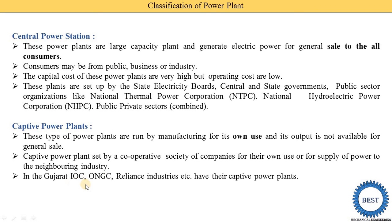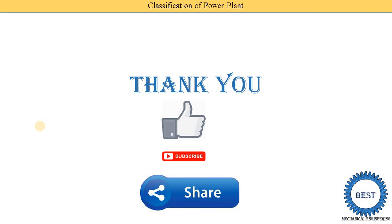In Gujarat, companies like IOC, ONGC, and Reliance Industries have their own captive power plants and use the electricity produced without purchasing from the state electricity board. The basic difference between central and captive is: in a central plant, electricity is sold to all consumers (public, business, industries), while in a captive plant, the electricity is used only for the company's own use.